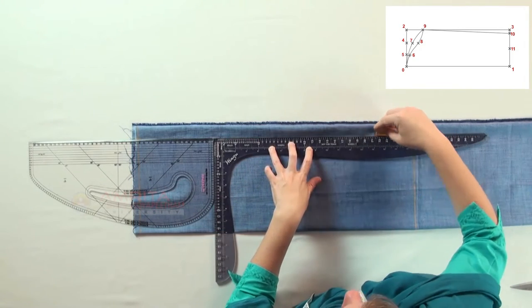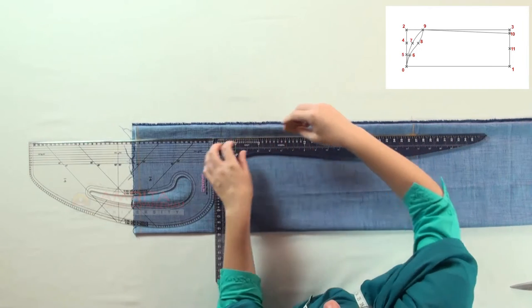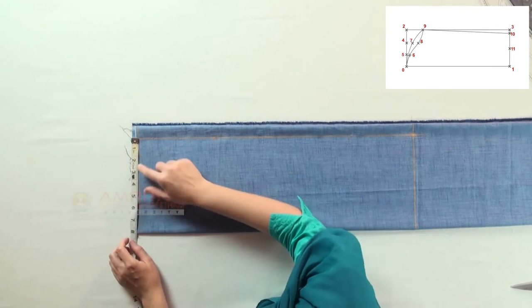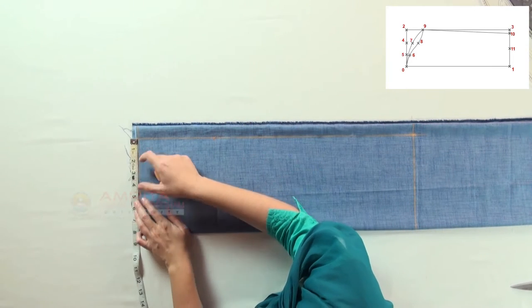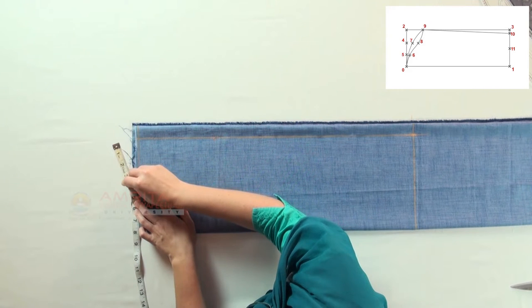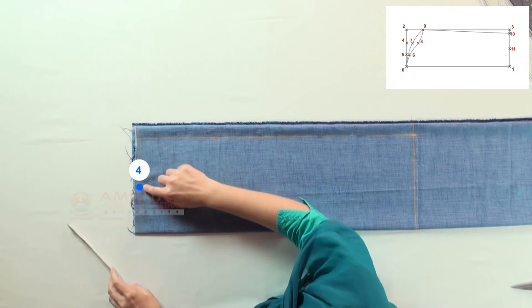Join points two and three in a straight line. Now find the midpoint of the line zero two and make a mark. This is point five.